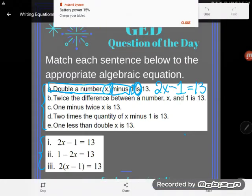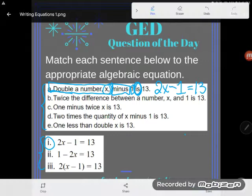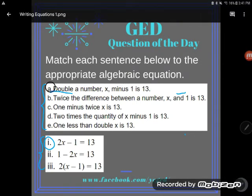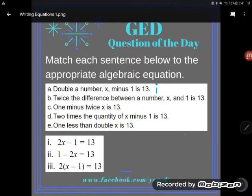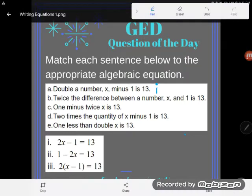So there we go. We can see that a matches with one. Two x minus one is equal to 13. So let's go ahead and erase all my messiness and just put a one up there. Okay, let's look at the next example.